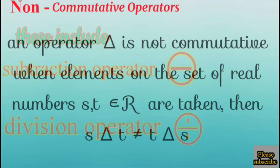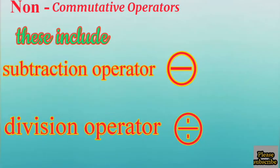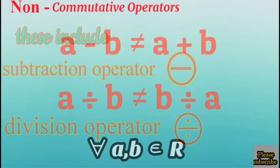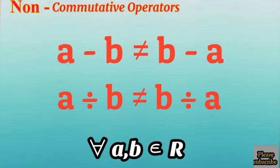We'll be looking at these non-commutative operators. They include the subtraction operator and the division operator. We show that for all A and B belonging to the set of real numbers, A minus B is not always the same as B minus A.